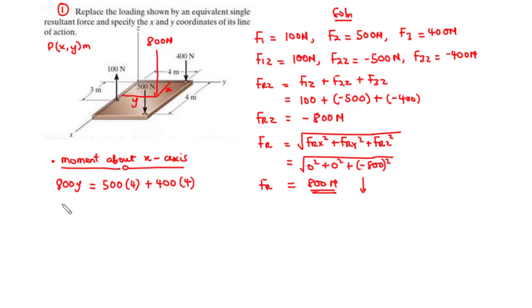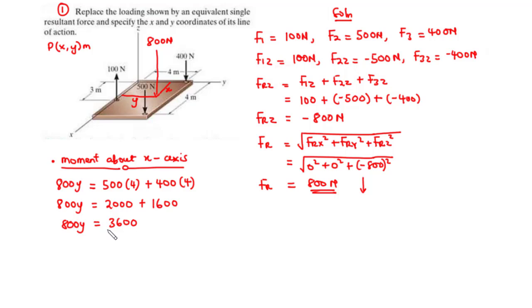Simplifying: 800Y = 500×4 + 400×4 = 2000 + 1600 = 3600. Dividing by 800 gives Y = 3600/800 = 4.5 meters.